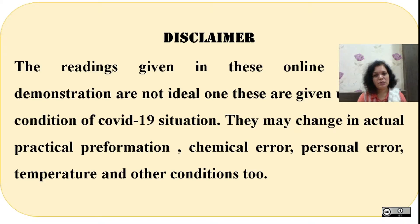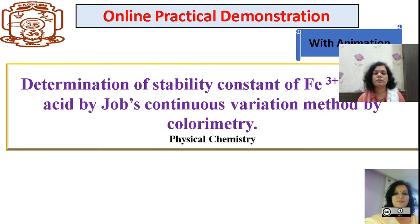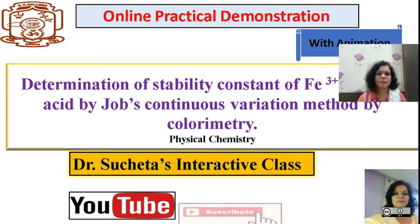The readings may change during actual practical performance due to chemical error, personal error, temperature, and other conditions. We are going to find out the stability constant for iron (Fe3+) by forming a complex of iron and salicylic acid, utilizing Job's continuous variation method by colorimetry.